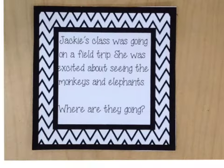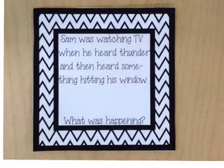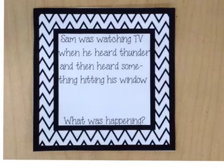Number seven. Jackie's class was going on a field trip. She was excited about seeing the monkeys and elephants. Make an inference and tell me where are they going. And number eight. Sam was watching TV when he heard thunder and then he heard something hitting his window. What was happening? Make your best inference.